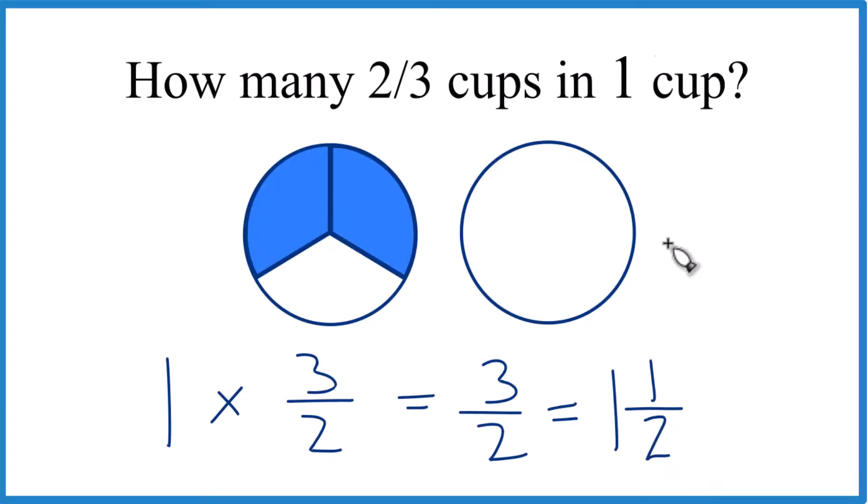So what we're saying is that two-thirds cup, this blue area here, goes into the full cup one and one-half times. And we can see that.